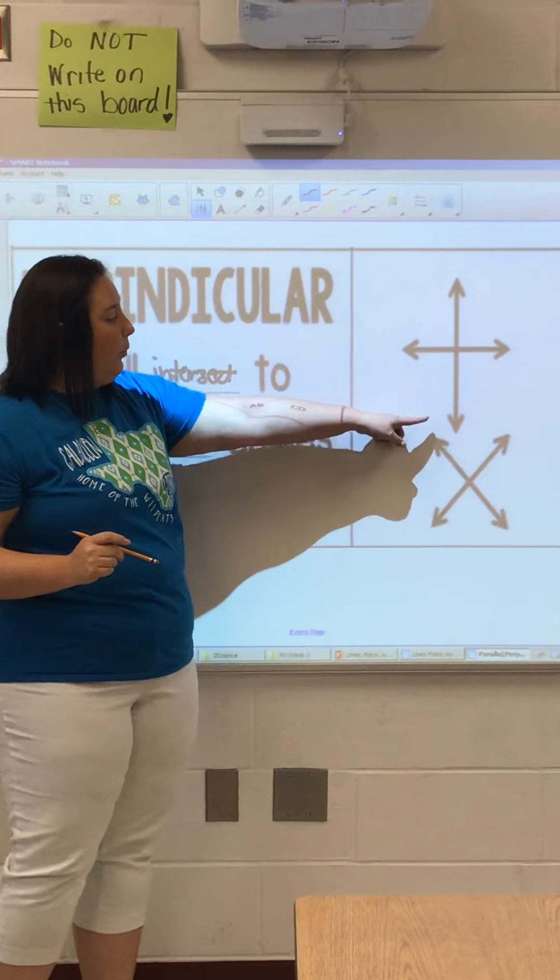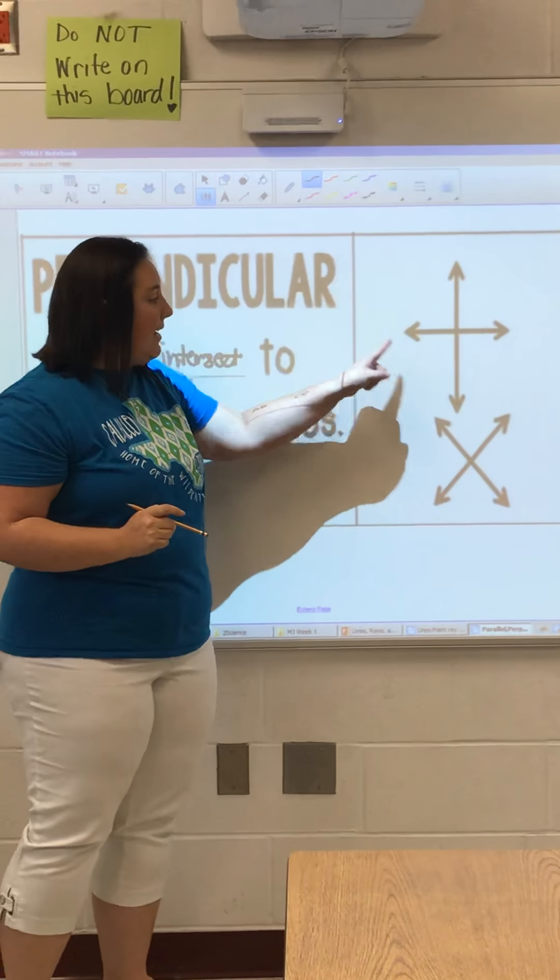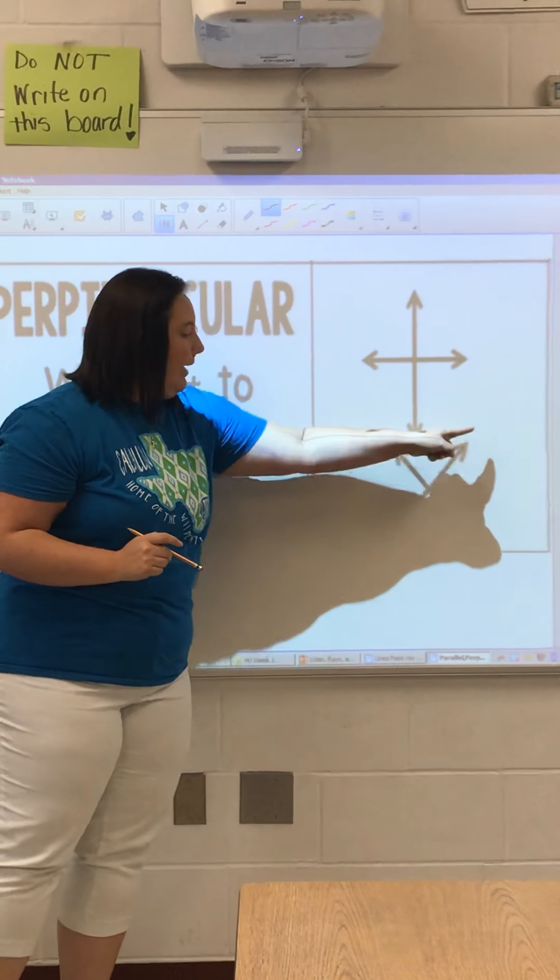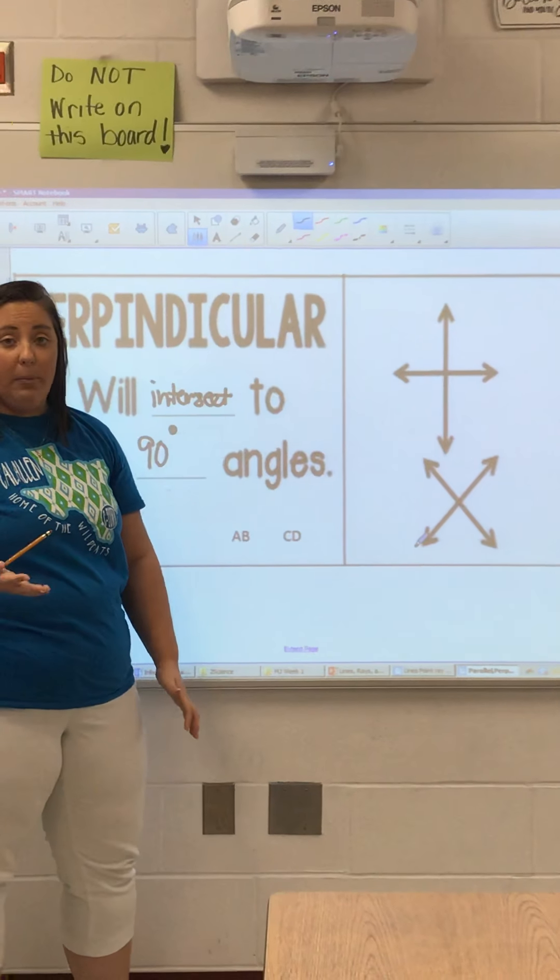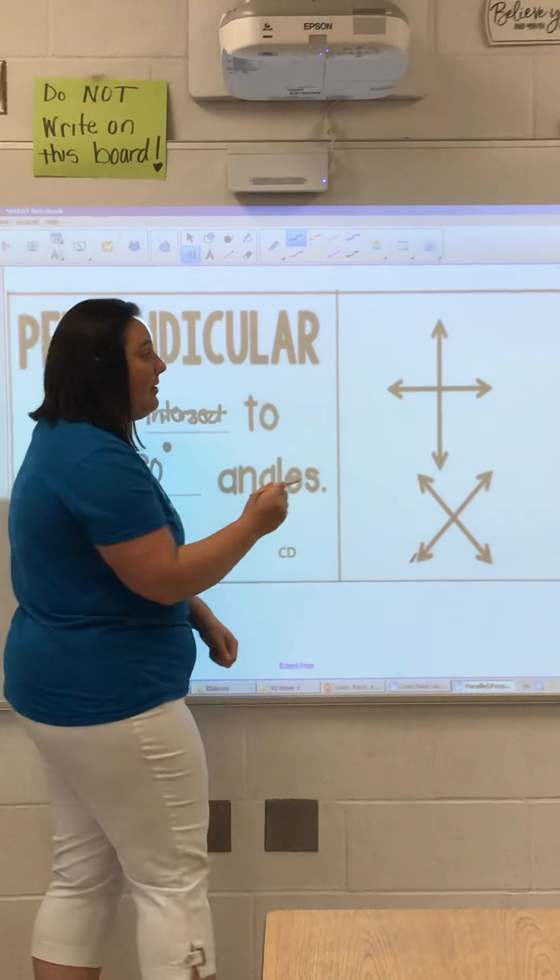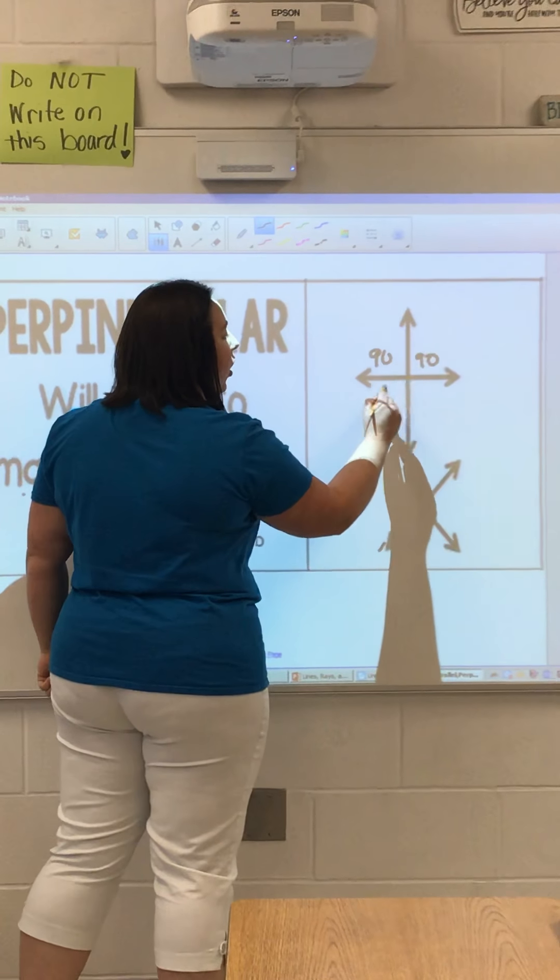Now, if you look over here, we think about intersecting lines in two examples. We think about it as intersecting making the plus sign, or intersecting making the times sign. We know that they're perpendicular lines because when they intersect or when they cross, they make 90 degree angles in all four corners.